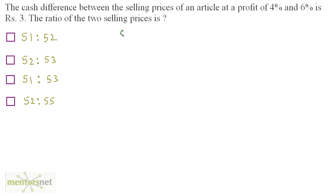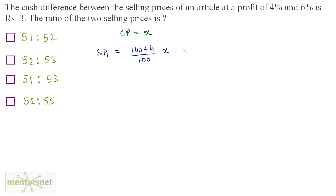First of all, let us assume that the cost price of this article be Rs. X. We have one of the selling prices at a profit of 4%, so let us term this SP1, which is equal to the cost price increased by 4%: (100 + 4) / 100 × X, which equals 104X / 100.